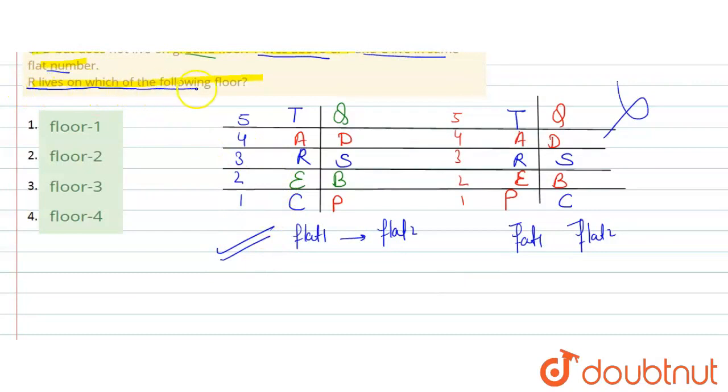Now the question is R lives on which of the following floor. So, let's look at which floor R is on. R is on the third floor, flat number 1. So, here you have floor 3. Floor 3 is option number 3. So option number 3, Floor 3 is the correct answer. Thank you.